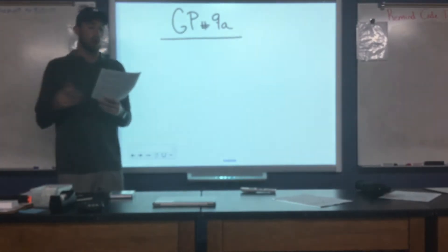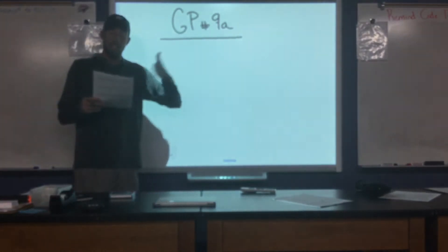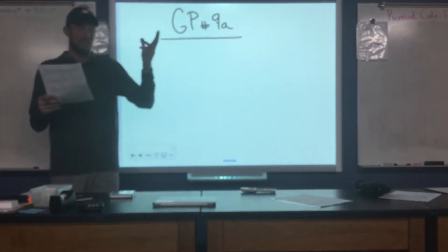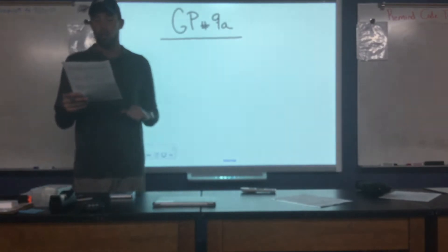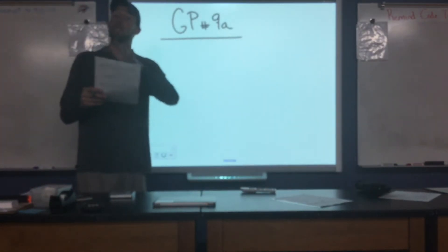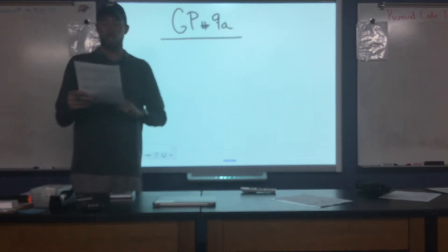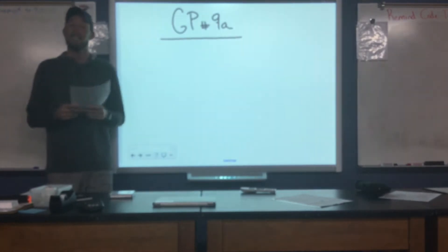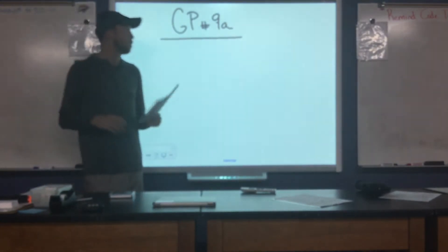We also know that the coefficient of friction between the red car's tires and the road is about 0.9, and we're told the skid mark is about six and a half meters long. We're told that the speed limit on the road is about 25 miles an hour, or 11.2 meters per second, and we want to use the information about the collision to determine if the blue car gets a ticket for speeding.